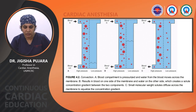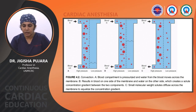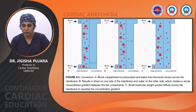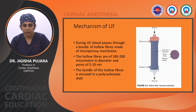In the figure, we can see convection. Figure A shows blood components are pressurized and water moves across the membrane; B shows the result with blood on one side and water on the other side, creating a solute concentration gradient between the two compartments; and C shows small molecules — a pillar weight solute — diffusing across the membrane and equalizing the concentration gradient.